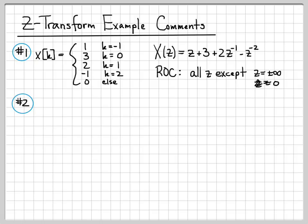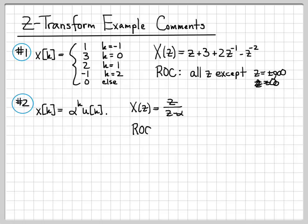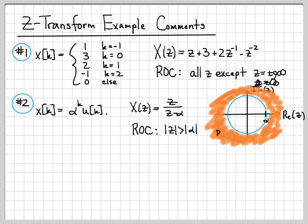In example 2, we worked with the discrete-time signal x(k) equals alpha to the k times u(k). We found that its Z-transform was equal to z over z minus alpha, and it had a region of convergence equal to the magnitude of z greater than alpha. We sketched what this looked like — the set of points in the complex plane outside the circle of radius alpha.